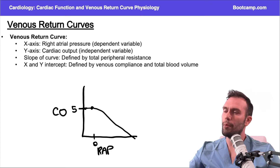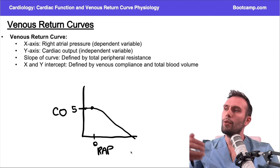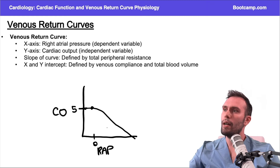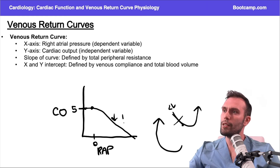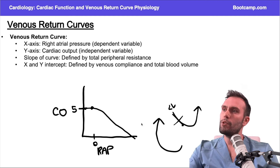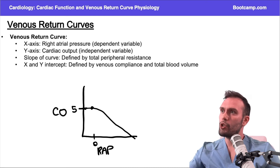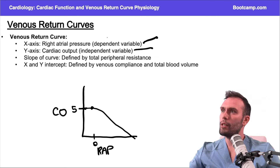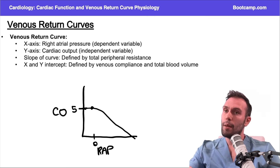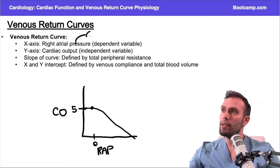As the cardiac output comes down, the right atrial pressure is going up. Why is that? As I move down this curve, I'm decreasing cardiac output more and more, so I have more blood backed up in the right atrium, increasing the right atrial pressure. We're changing the cardiac output to see what happens to venous return, or right atrial pressure, which is the surrogate marker — sometimes also called the surrogate marker of central venous pressure, the CVP.